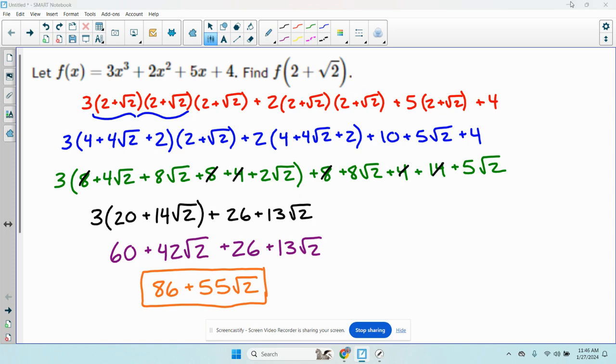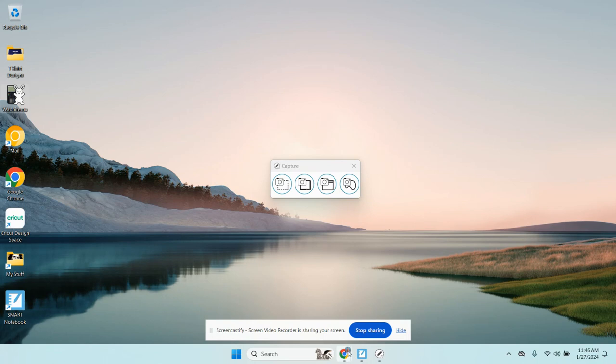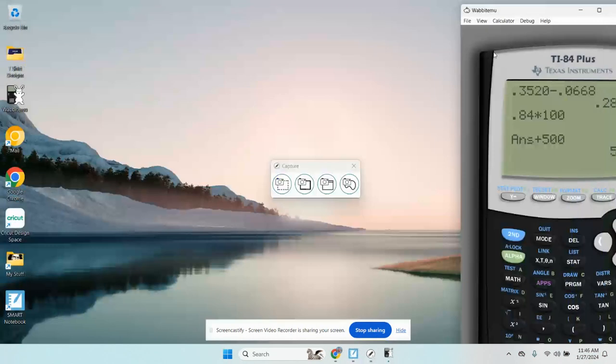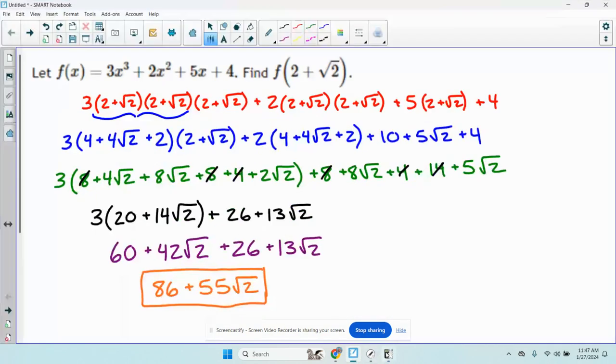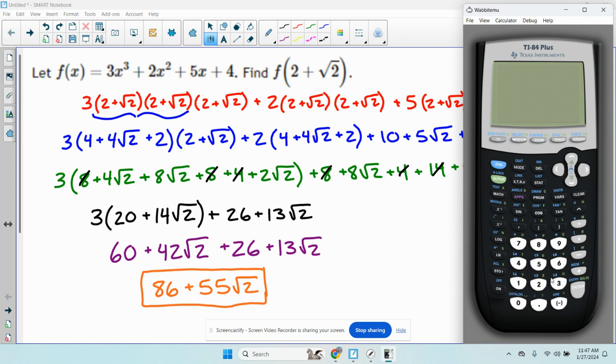Let me double check with the calculator. So what you can do first is say 2 plus the square root of 2. That's that. And I'm going to rewrite the equation. 3 times this cubed plus 2 times this squared plus 5 times this plus 4.